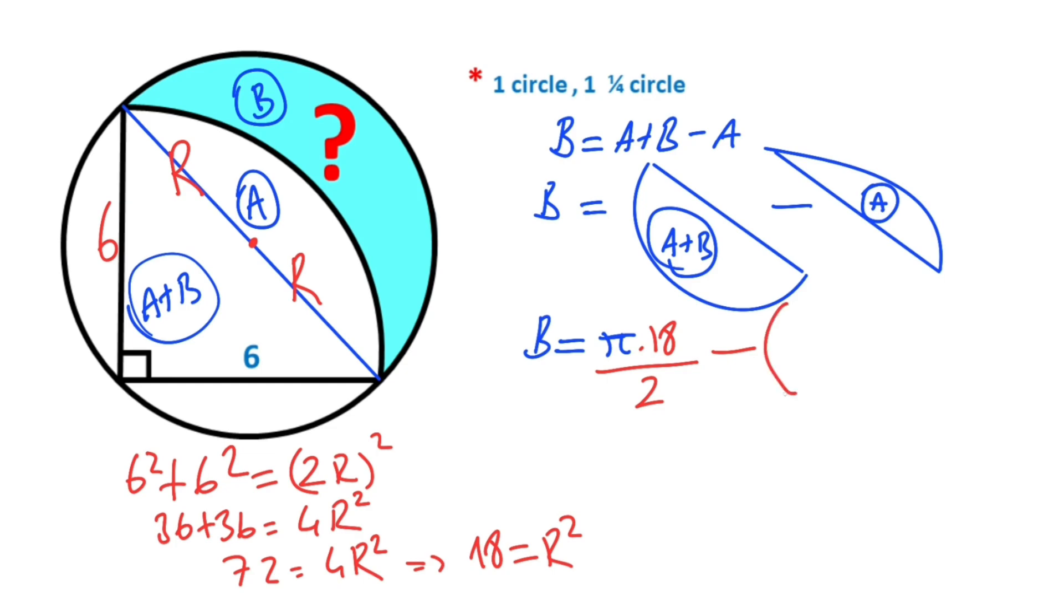Region A equals quarter circle minus triangle area. Therefore, π times r squared—r equals 6—over 4, minus the triangle area, so 6 times 6 over 2.